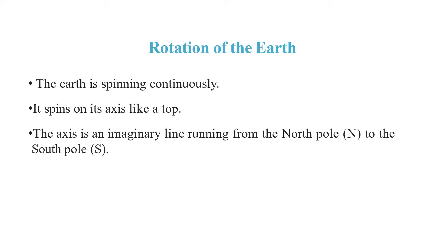Children, while doing the map work, we have seen the North Pole and the South Pole. So, the axis is an imaginary straight line that passes through the North Pole, the center of the Earth, and then it comes to the South Pole. It joins the two poles.